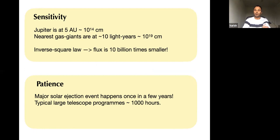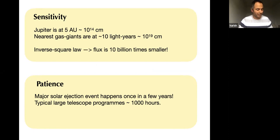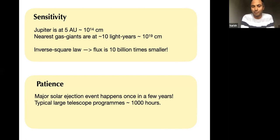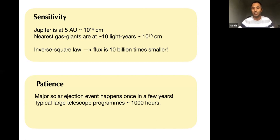So what stops us from doing all of this? Two things: sensitivity and patience. Jupiter is at about 5 AU, roughly 10^14 centimeters. The nearest stars potentially hosting Jupiters are about 10 light years away — 10^19 centimeters. Applying the inverse square law, their flux is 10 billion times smaller. You need a massive telescope to reach this sensitivity, and you'll still first detect systems far more energetic than Jupiter — some kind of super-Jupiter. The second challenge is patience: the most energetic solar flares giving coronal mass ejections don't happen very often.